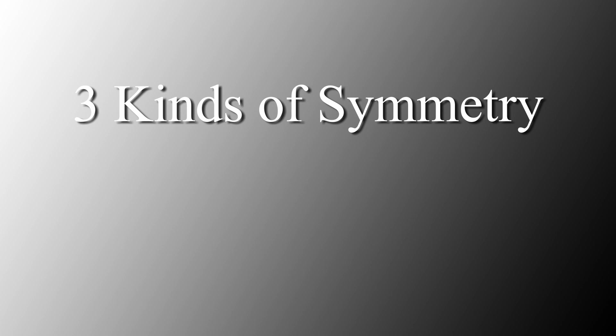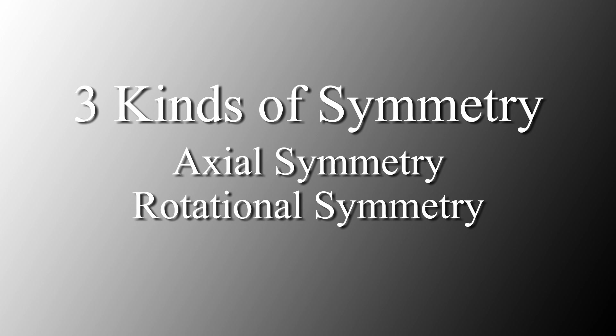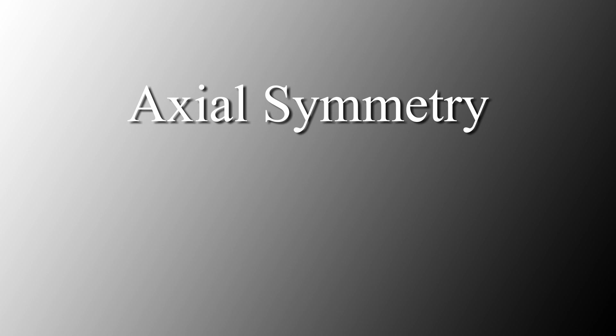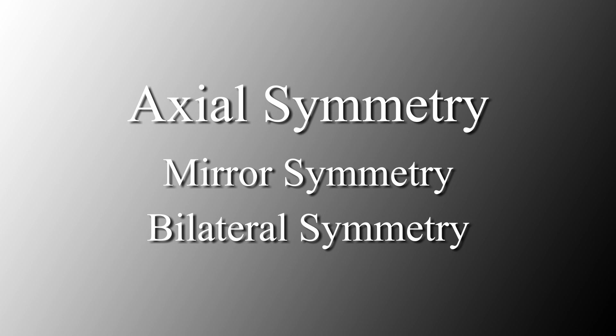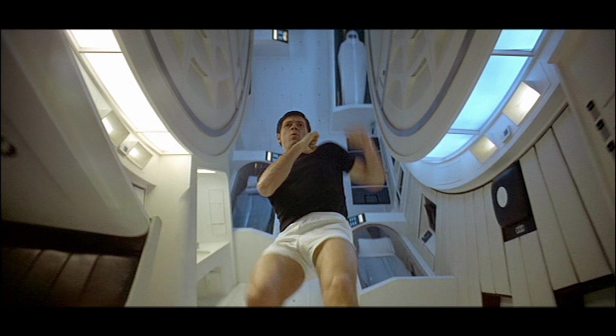Symmetry refers to materials being organized in such a way that it conveys a sense of unity through the repetition of objects. In cinematography it is appropriate to speak of three kinds of symmetry: axial symmetry, rotational symmetry, and translatory symmetry. Axial symmetry is also referred to as mirror symmetry or bilateral symmetry — it is the kind most people think of when you talk about symmetry. Axial symmetry is simply mirroring objects in respect to an axis.